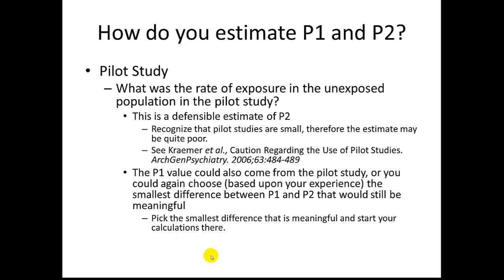Another possible way to estimate these numbers is to conduct a pilot study. What was the rate of exposure in the unexposed population in your pilot study? This is a defensible estimate of P2. However, recognize that pilot studies are small by definition. Therefore, the estimate may be quite poor. An interesting article on this topic is Kramer et al. from a 2006 issue in the Archives of General Psychiatry. You could also estimate P1 from the pilot study or you could again choose, based upon your experience, the smallest difference between P1 and P2 that would still be meaningful. Again, pick the smallest difference that is meaningful and start your calculations there. See if the numbers that you come up with make sense and yield a good estimate and a reasonable sized study.